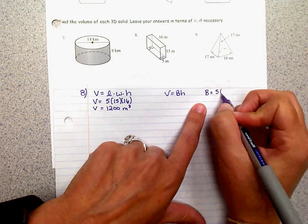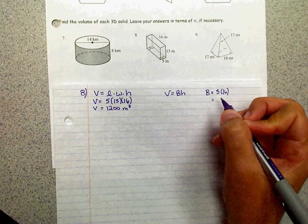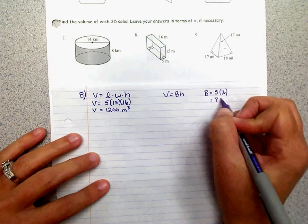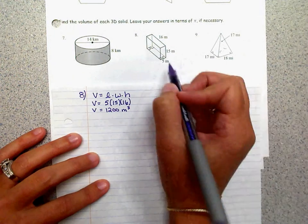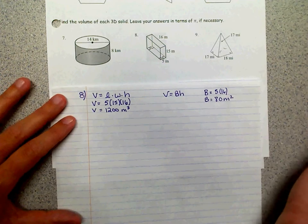5 times 16, which is 80. That's your base, and your height is what's connecting your bases, which would be the 15.